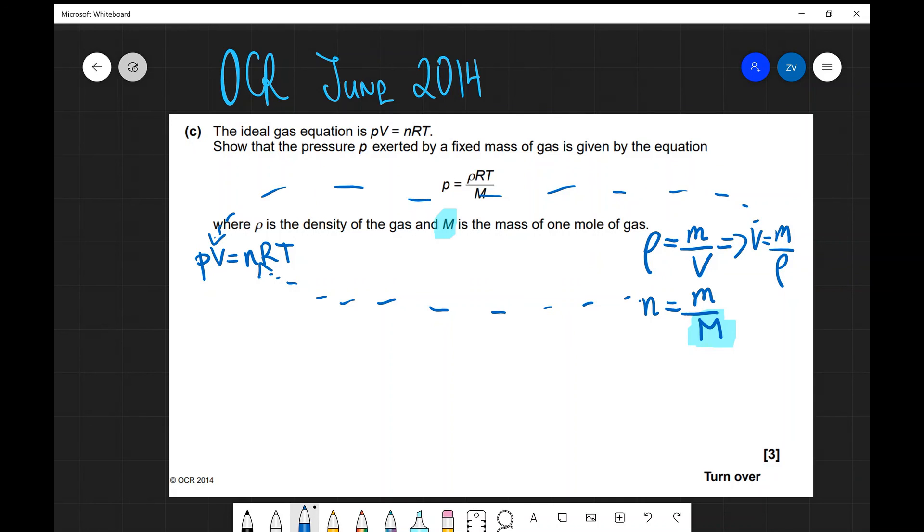That's going to equal the number of moles. For the number of moles, I'm going to write M over capital M, times RT. So this is already starting to resemble the equation that I'm looking for.